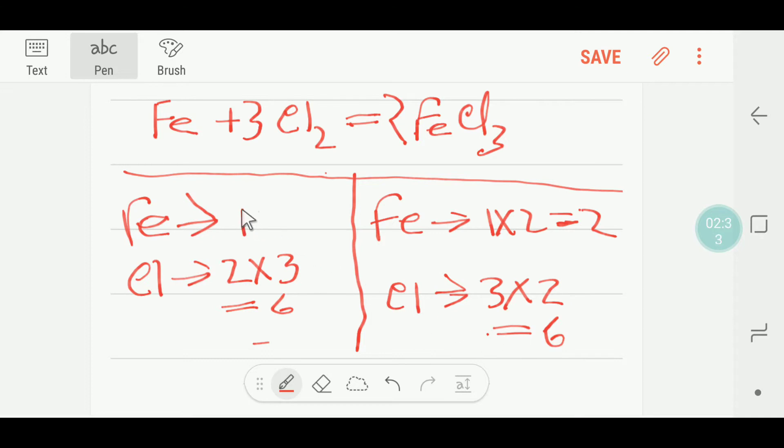So if I multiply here by two, that gives me two. If I multiply here by two, these two will come before this iron. So I will put here two. Now my iron is two and two, balanced. My chlorine is six and six, balanced.